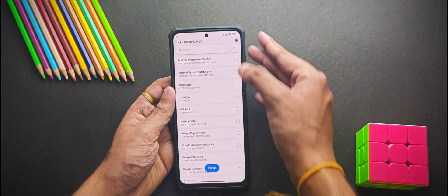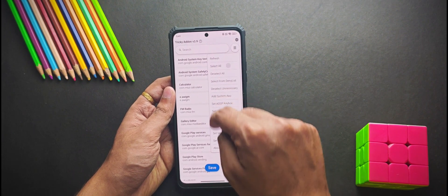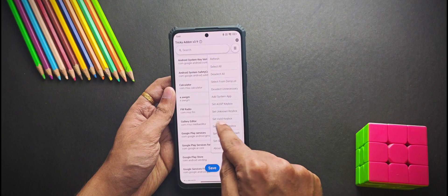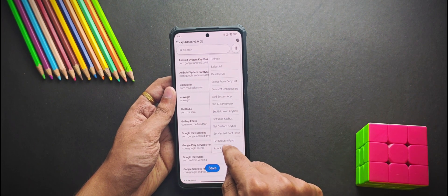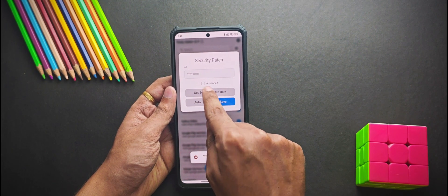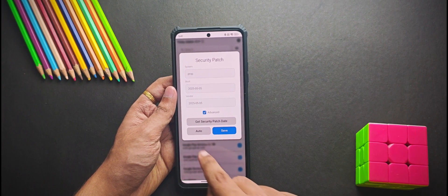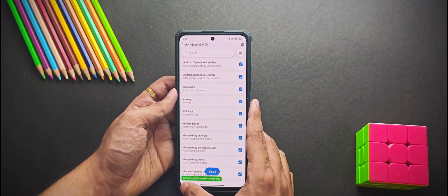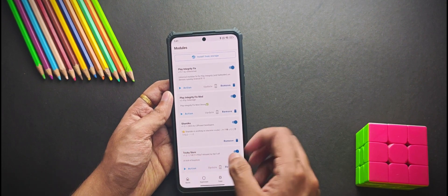Now you will need to tap on these three dots on the top right and then tap on select all, deselect unnecessary, and then tap this set valid key box. Once you have done it tap on the set security patch and then press the get security patch date button. So once it has fetched the latest security patch date just press save and moving back you will need to tap on this play button of the Play Integrity Fix Mod.